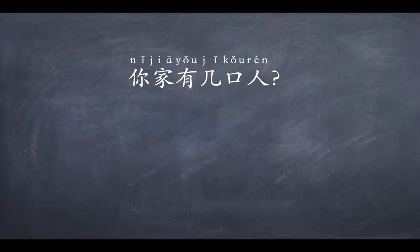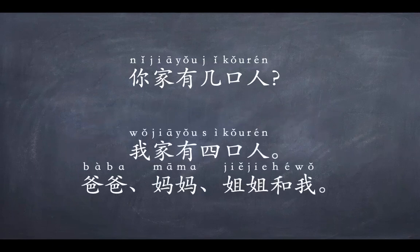My answer is: 我家有四口人，爸爸，妈妈，姐姐和我. Now you know about my family. What about yours? 你家有几口人? Pause the video and give your answer.